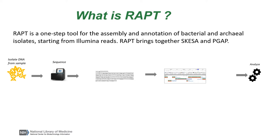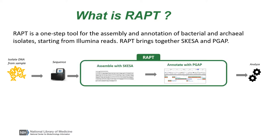Consider this very common workflow where a scientist will collect some samples, bring them back to the lab, grow them, isolate the DNA from each sample, sequence the DNA, assemble the reads, annotate the genome that is produced, and then move on to the analysis of the gene content. RAPT takes care of the middle steps — it will assemble the genome with SKESA and annotate it with PGAP.